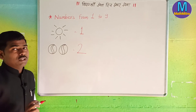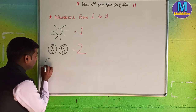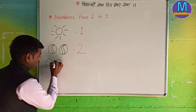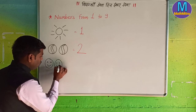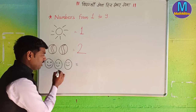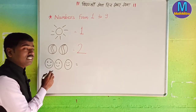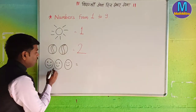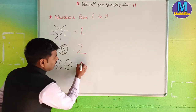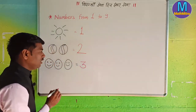This is the third number. How many balls are there? One, two — and this is the last one. What is this? This is a smiley. How many balls are there? One, two, three — three. This is three.